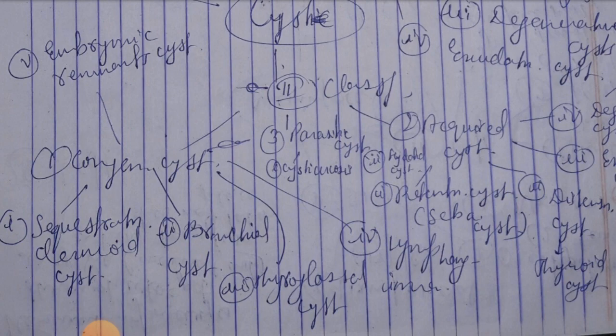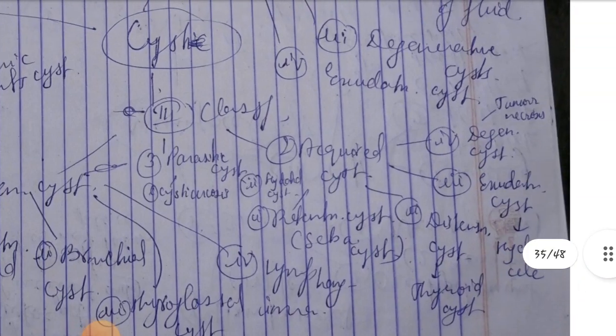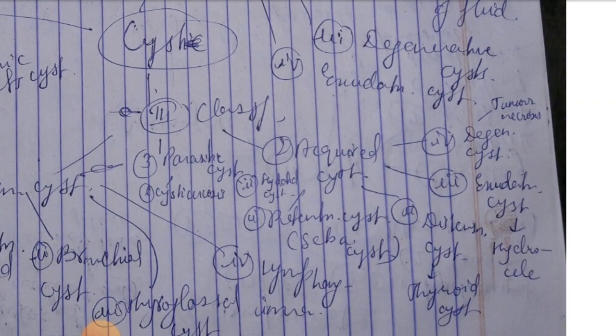Fourth lymphangioma and fifth embryonic remnant cysts. Then second, acquired cysts. The acquired cysts are first retention cysts.